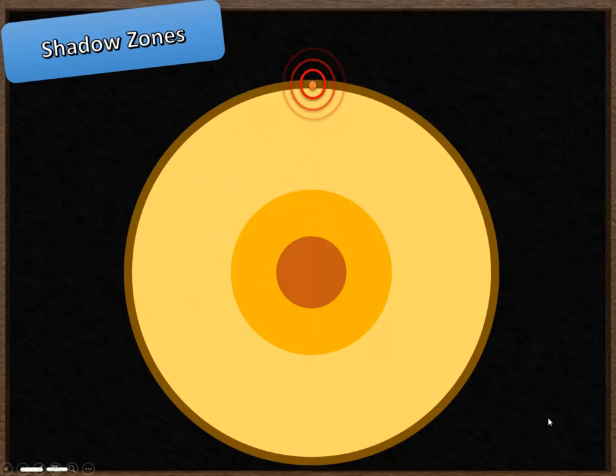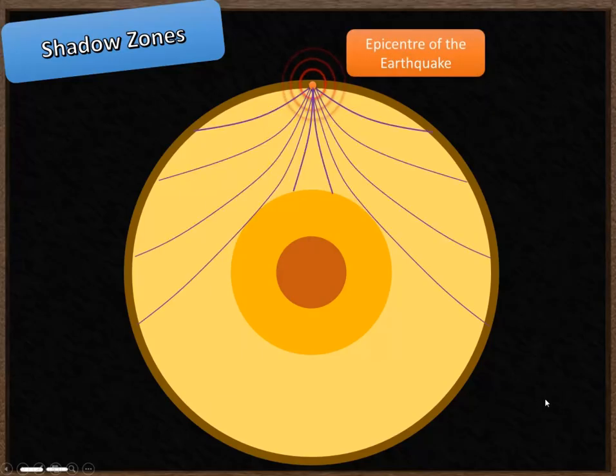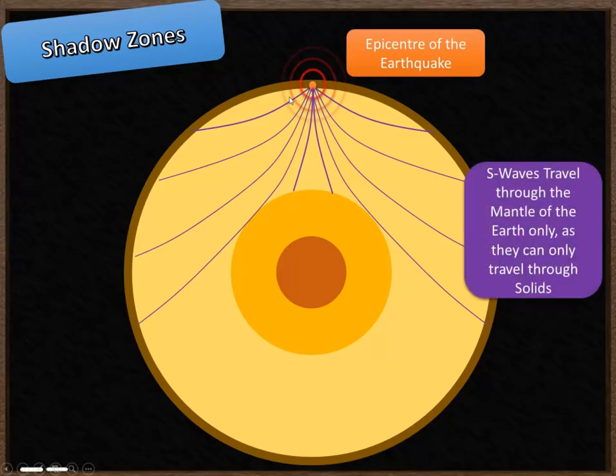We're now going to look at what happens to S waves. Remember, S waves can only travel through solids. S, solid. S waves travel through solids. So here we go. There's our S waves, slightly different colour.